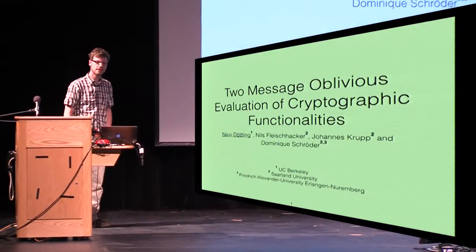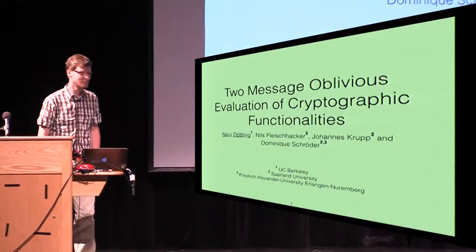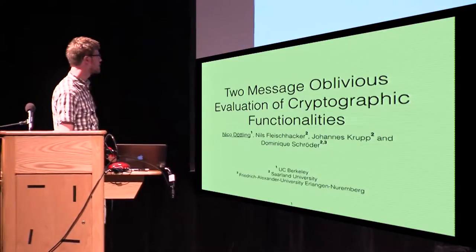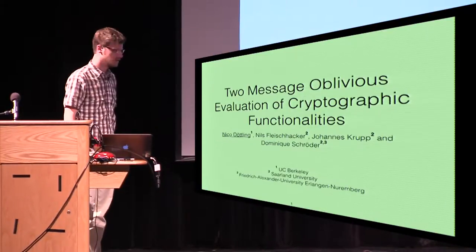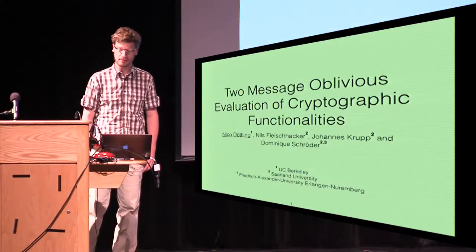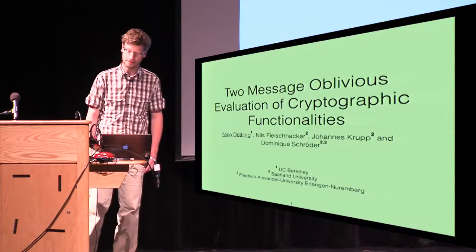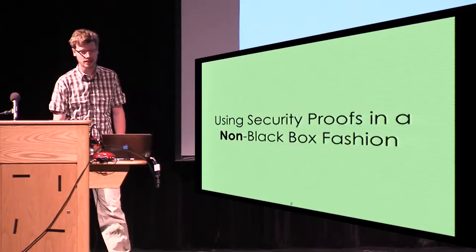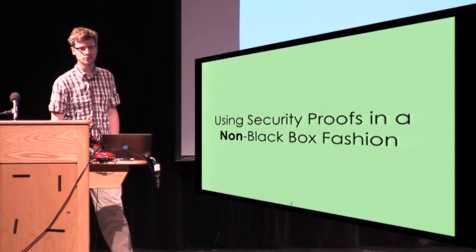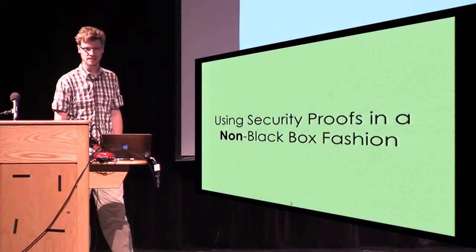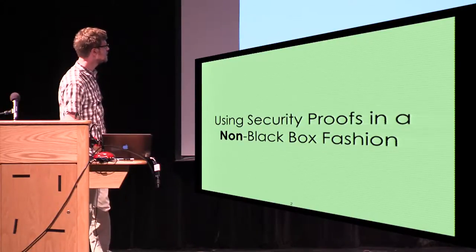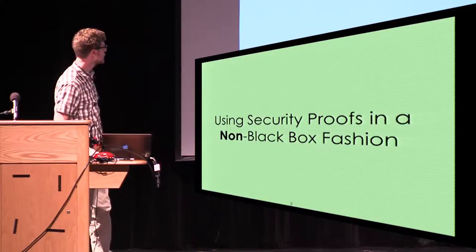Thanks for the intro, Monarch, and thanks to all of you for holding out until now. I'm Nico, and this is joint work with Nils Fleischhacker, Johannes Krupp, and Dominik Schröder. The title of this talk is Two-Message Oblivious Evaluation of Cryptographic Functionalities, but what I really want to talk about is how to use security proofs in a non-black-box fashion.